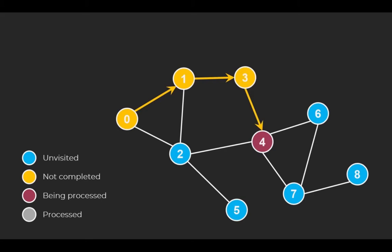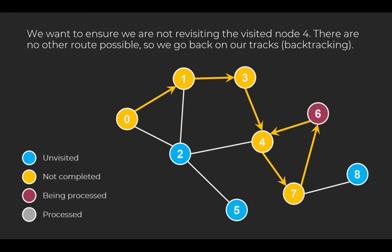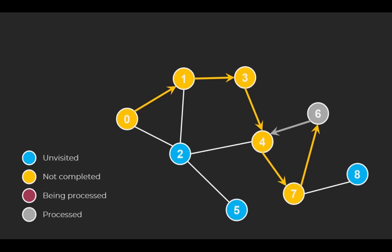Then we keep exploring the graph in that manner. We want to ensure that we are not revisiting the visited node 4. There are no other routes possible, so we go back on our track. We call that backtracking. There are no more unvisited edges from node 6. Therefore, we have finished processing node 6. From there, we backtrack.